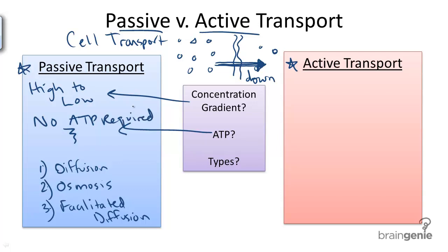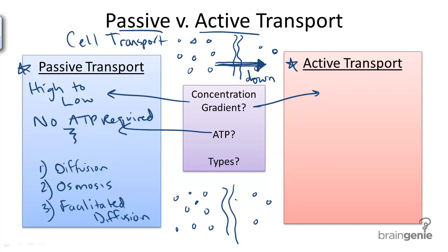Now let's compare passive transport — these three types — to active transport. In active transport, we again find this phospholipid bilayer, this semi-permeable membrane. In active transport, we always move substances against the concentration gradient. So we are going to move substances from a low to a high solute concentration.